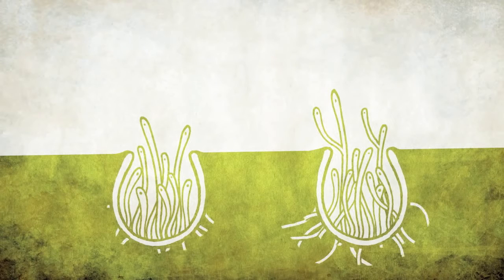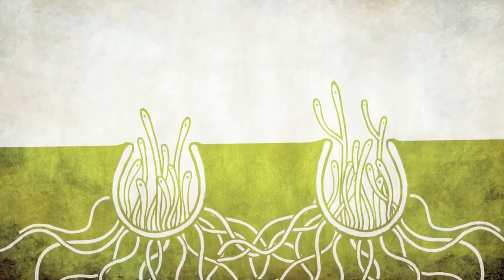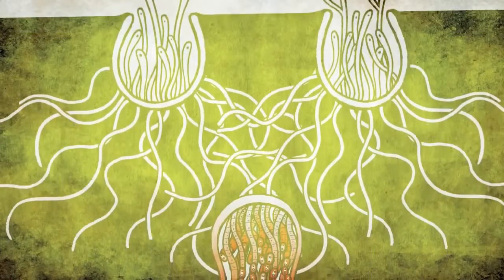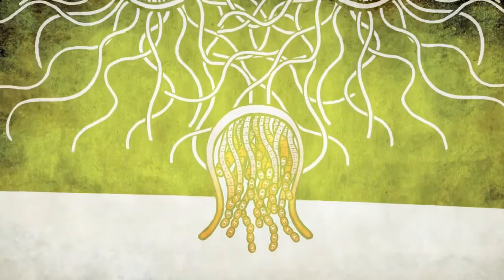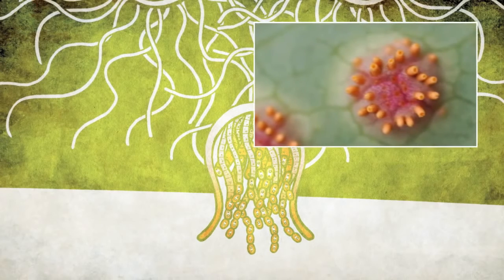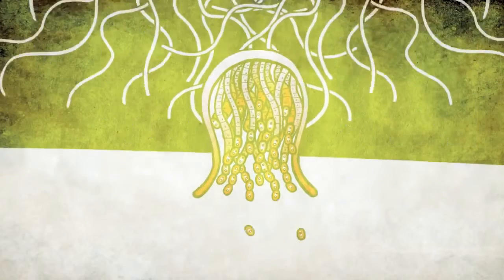Once fertilized, the hyphae grow down through the barberry leaf, where they eventually produce stunning reddish pustules on the underside of the leaf, marked by numerous peach or orange-colored tube-like structures called aecia. When exposed to moisture, these aecia, quite visible to the naked eye, forcefully eject the next spore form of stem rust, aecia spores.